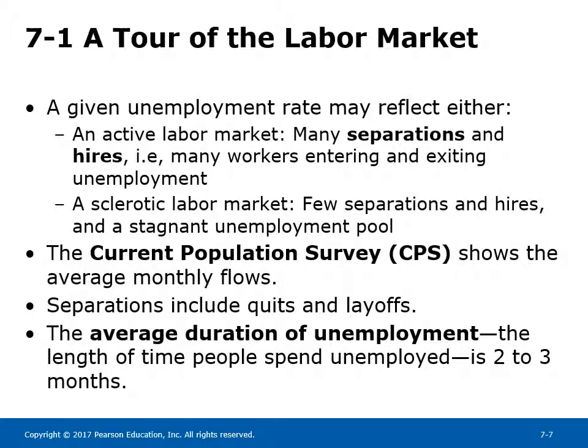A given unemployment rate may reflect either an active labor market — many separations and hires, with many workers entering and exiting unemployment — or a sclerotic labor market with few separations and hires and a stagnant unemployment pool. The Current Population Survey shows the average monthly flows. Separations include quits and layoffs. The average duration of unemployment, the length of time people spend unemployed, is 2-3 months.